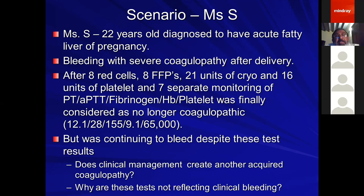A second case: a lady with acute fatty liver of pregnancy, bleeding severely from coagulopathy after delivery. She was given eight red cells, eight FFPs, 21 units of cryoprecipitate, 16 units of platelets, and seven separate monitoring sessions for PT, APTT, fibrinogen, hemoglobin, and platelet count. Eventually, results normalized — PT 12.1, APTT 28 seconds, fibrinogen 155, hemoglobin 9.1, platelet count 65,000. Yet she continued to bleed. PT and APTT represent the old extrinsic and intrinsic pathways and do not exactly represent the actual coagulation process, so they were not reflecting the clinical bleeding.